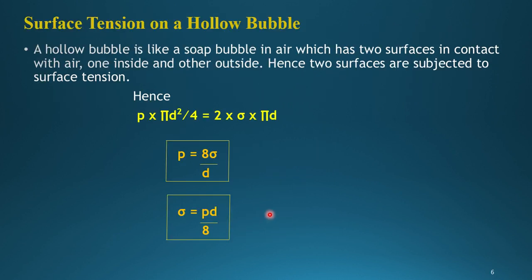Now let's calculate surface tension for a hollow bubble, like a soap bubble shown in the thumbnail. A soap bubble has very little liquid; the inside is mostly air, and the outside is also surrounded by air. Since both sides of the geometry are in contact with air, there are two surfaces contributing to surface tension. Therefore, for a hollow bubble: P = 8σ/d, and σ = Pd/8.